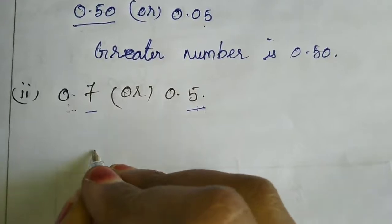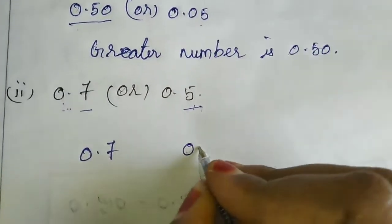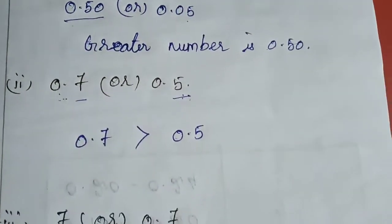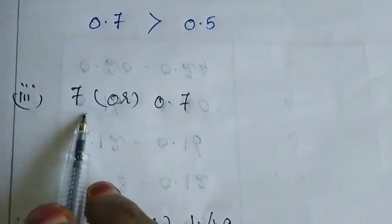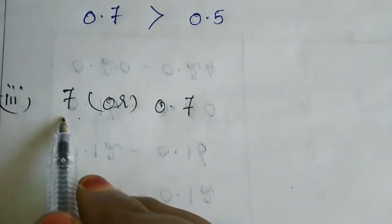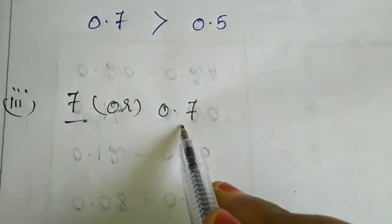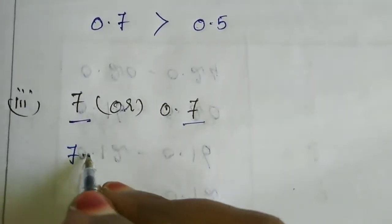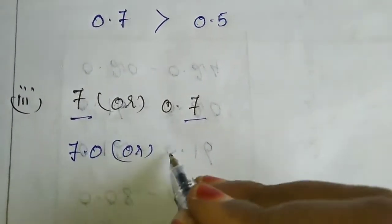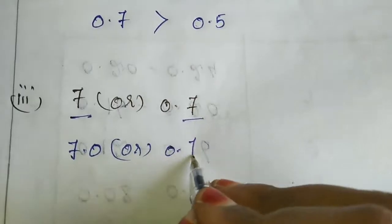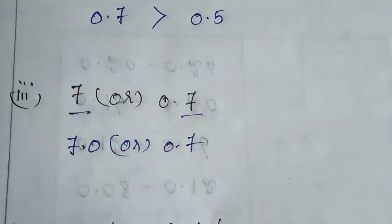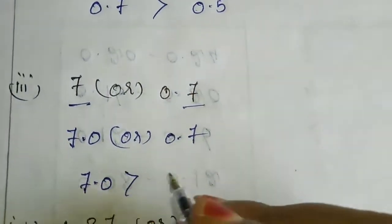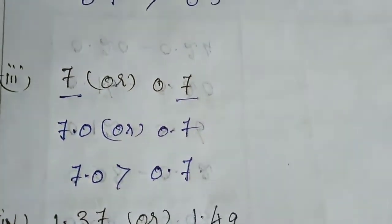I am going to express it in symbol now. 0.7 is greater than 0.5, so we use the greater-than symbol. Now see the third sum. The first one is a whole number, and here there is one digit after the dot. So we equalize: 7.0 or 0.7. We know the whole number is greater, so 7.0 is greater than 0.7.